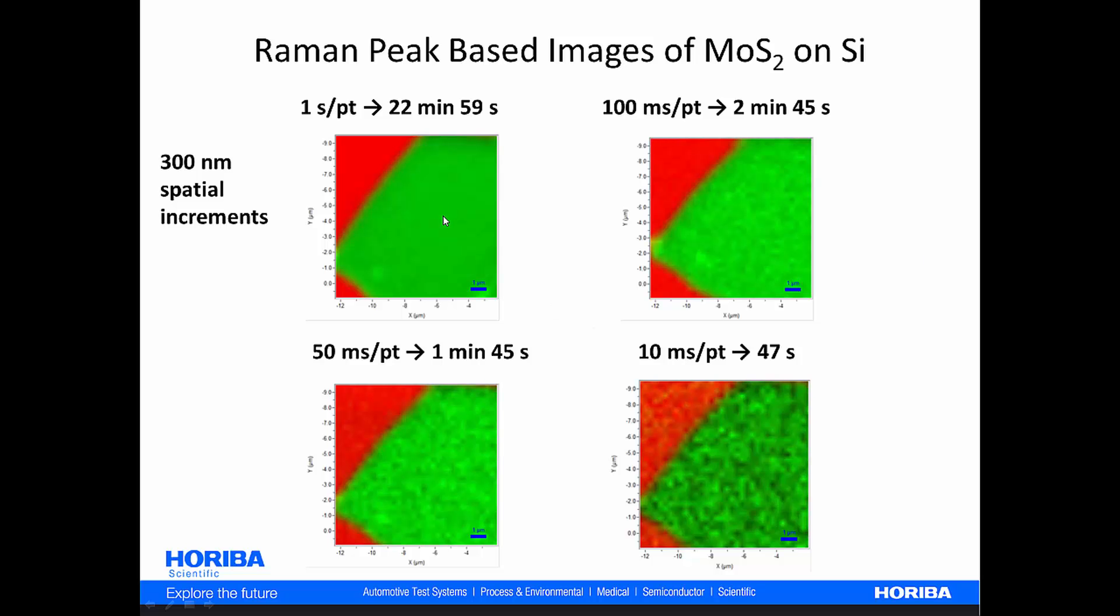And so what I hope you can see here is that in moving from one second per point at a total of essentially 23 minutes of integration time to a tenth of that time, two minutes, 45 seconds, where you go to 100 milliseconds per point, down to 50 milliseconds per point, you can really cut your times and still maintain pretty decent imaging.